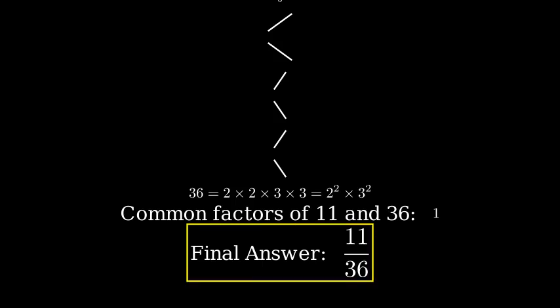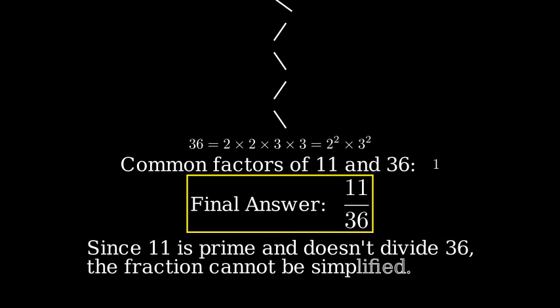To verify this is correct, we can check that 11 and 36 have no common factors greater than 1. Since 11 is prime and doesn't divide 36 evenly, we know this fraction cannot be simplified further.